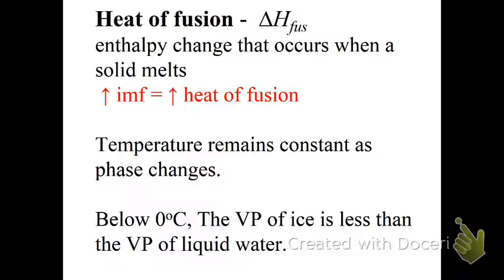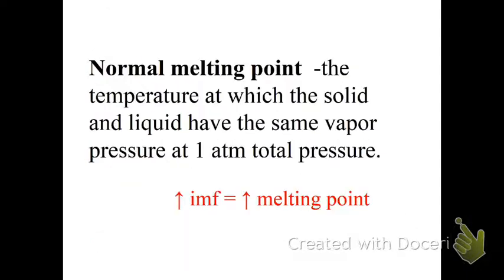Below 0 degrees Celsius, the vapor pressure of ice is less than the vapor pressure of liquid water. The normal melting point is the temperature at which the solid and the liquid have the same vapor pressure at one atmosphere. Normal melting point is the melting point at one atmosphere. And again, high IMF, high melting point.